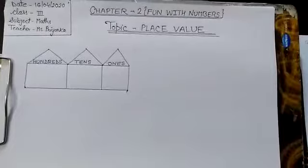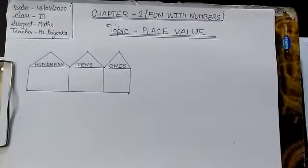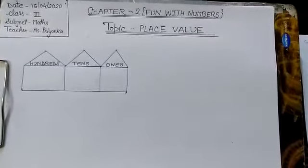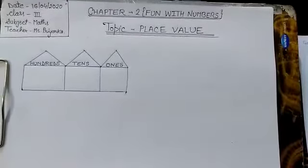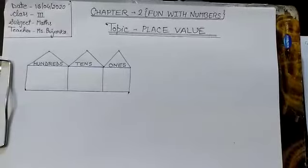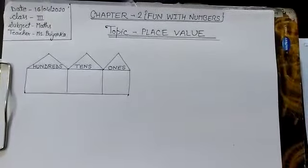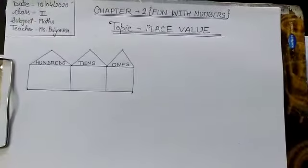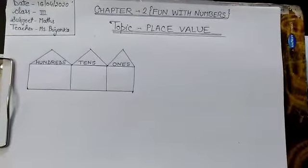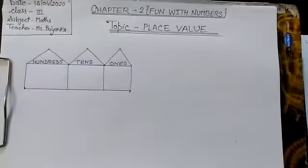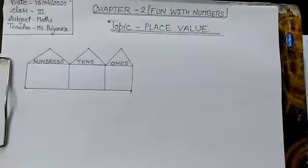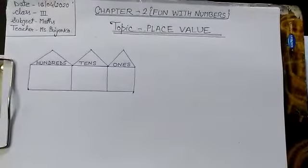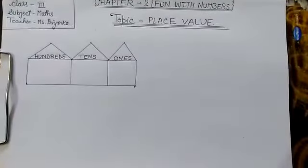Students, there are two types of number system. One is Indian number system and other is international number system. Our today's topic, place value is a term which is with reference to our Indian number system. Our place value system is related to Indian number system. Later on in next classes, we will study about international number system.